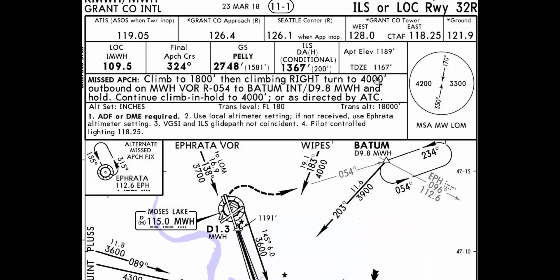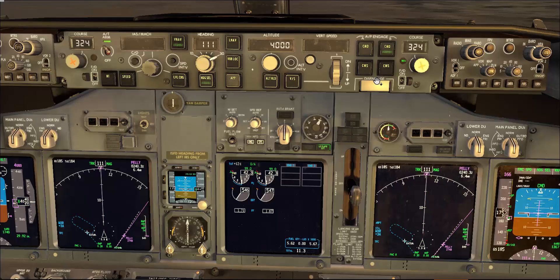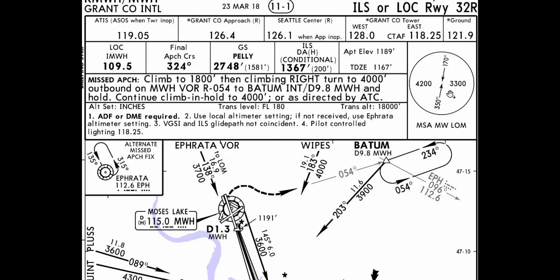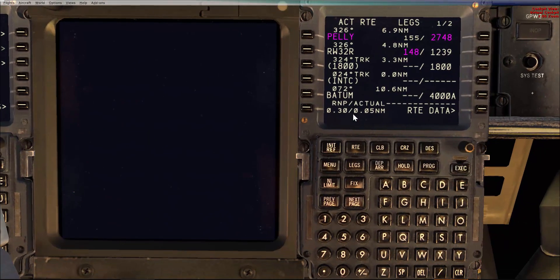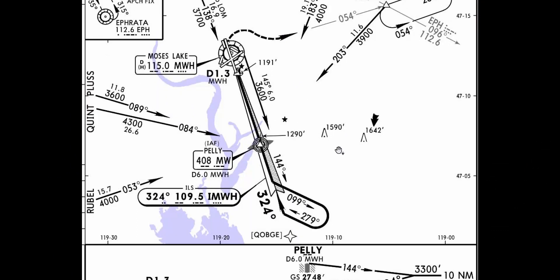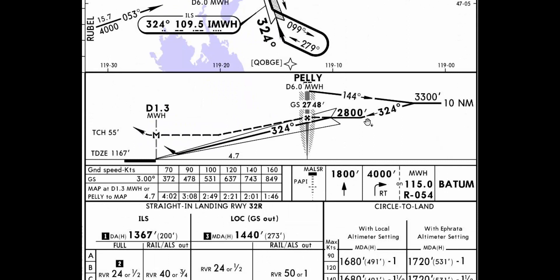Touchdown zone 1167 — we know it's set already, but we need to double check. So we have 1200. MSA: 3300 for the east, 4200 for the west. Now for the missed approach: climb to 1800, then climb in right turn to 4000 outbound, Mike Whiskey Hotel VOR radial 054 to bottom and hold. Continue climb and hold to 4000 or as directed by ATC. Just a quick look at the missed approach procedure with the altitudes and the hold-over pattern. We'll skip the notes section. There's nothing much to mention since this is radar vectors for the ILS. You can mention 2800 to intercept the glide slope.